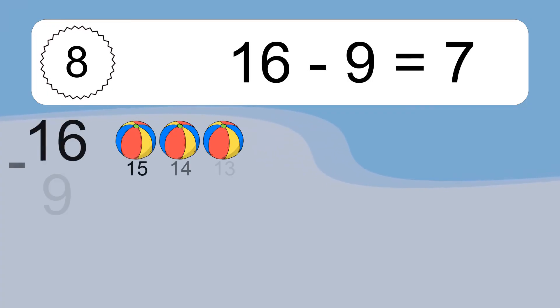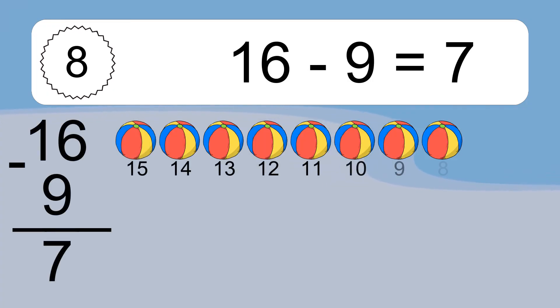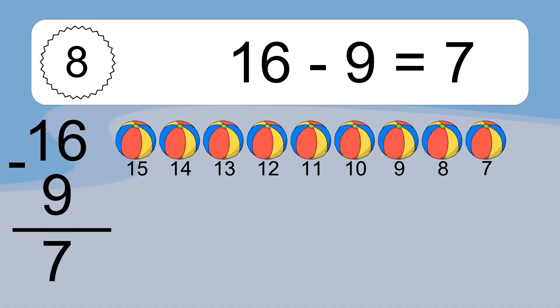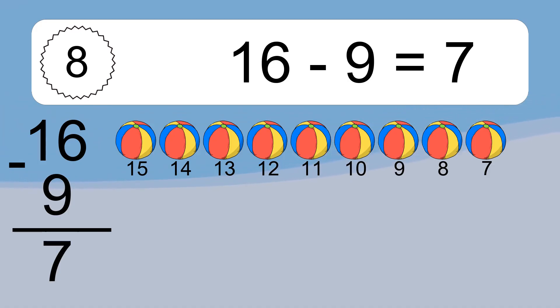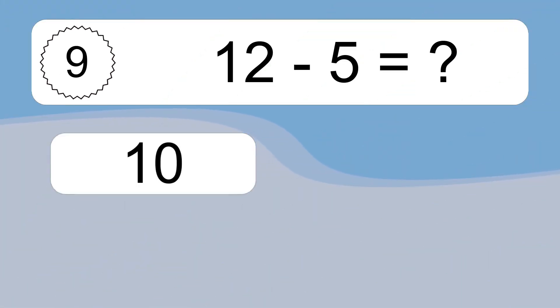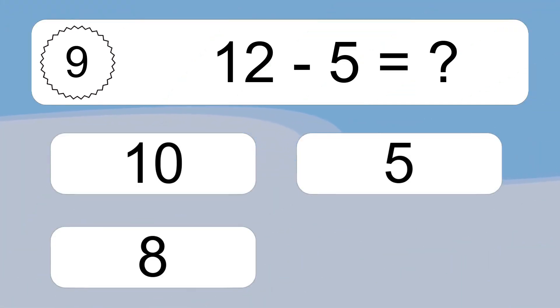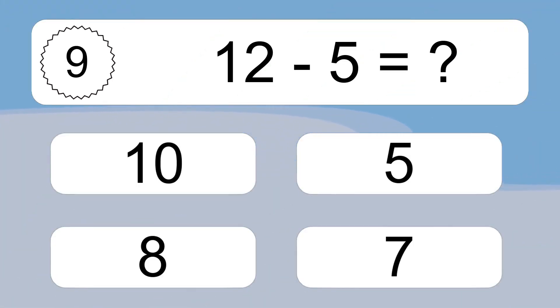16 minus 9 equals what? 16 minus 9 equals 7. Let's count it: 15, 14, 13, 12, 11, 10, 9, 8, 7.